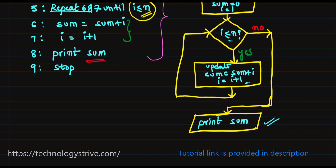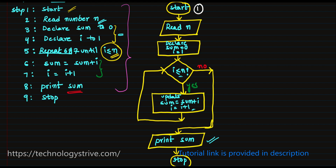If the condition is No, we proceed to print sum — using a parallelogram for output labeled 'Print sum'. Finally, we draw an oval labeled 'Stop'. This completes the flowchart, which is the pictorial representation of the algorithm. Now let's write the code in C programming language.